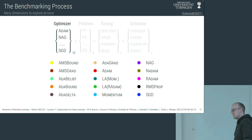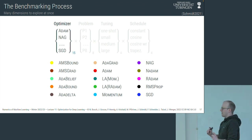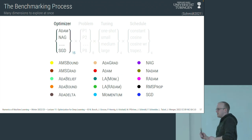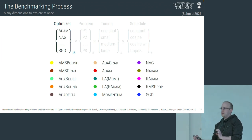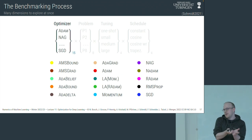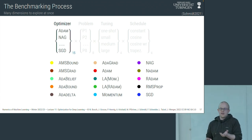A question from the audience: why isn't AdamW on the list, since OPT used it? Yes, it's very similar to Adam. The difference between Adam and AdamW is how weight decay is implemented — it's more about the regularization strategy, and there's a philosophical question about whether this is a different training method or part of the model regularization. We didn't include AdamW in this benchmark, but it's certainly something one could do.